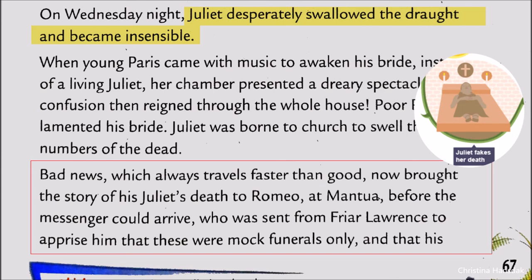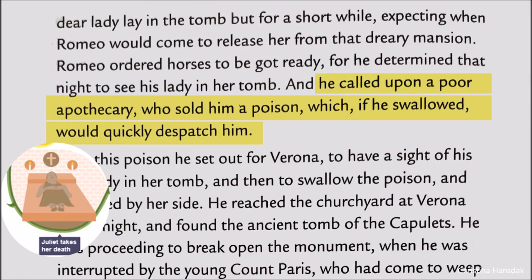Before the real messenger could arrive, Romeo received the false news that Juliet had died. Actually, she was cold only for 24 hours. But Romeo thought Juliet was no more. He went to a pharmacist, bought poison, and with that poison he set out for Verona with his servant Balthazar on horseback.